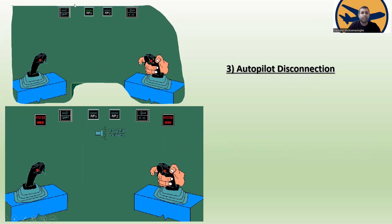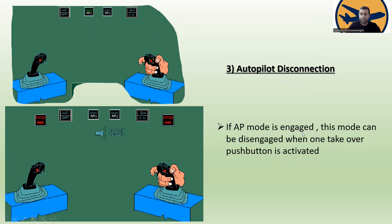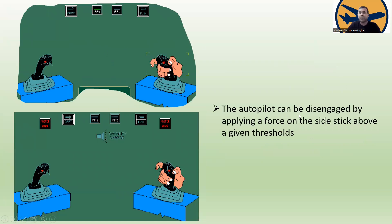For autopilot disconnection: if autopilot mode is engaged, it can be disengaged when the takeover push button is activated. Additionally, the autopilot can be disengaged by applying a force on the side stick above a given threshold. When the autopilot is disengaged, two master warnings appear along with a continuous time indication.